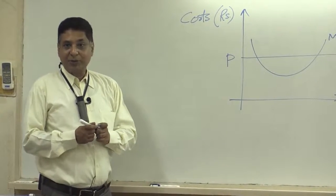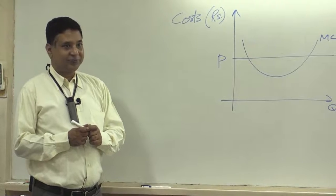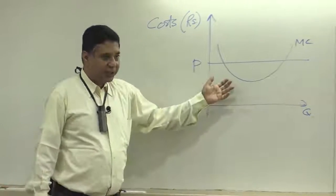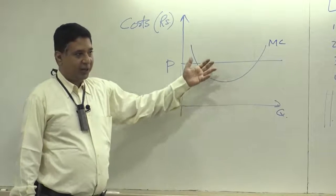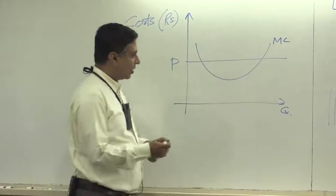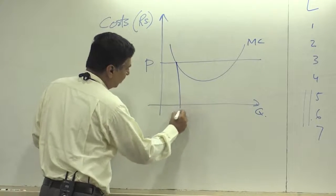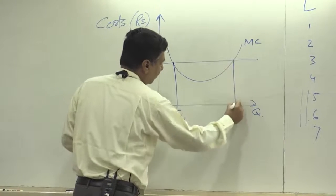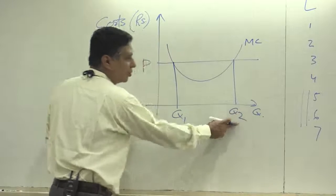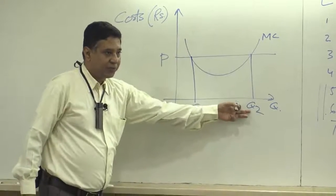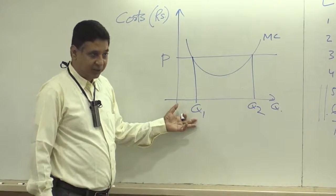So, how much should you produce? You would set price equal to marginal cost. And again, we would say that if this is Q1 and this is Q2, then you would produce Q2 because at Q1 you cannot be maximizing profits.